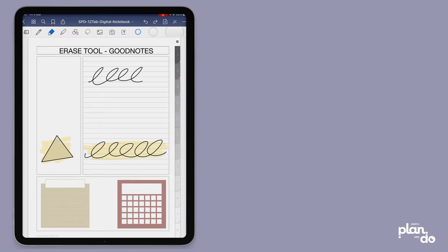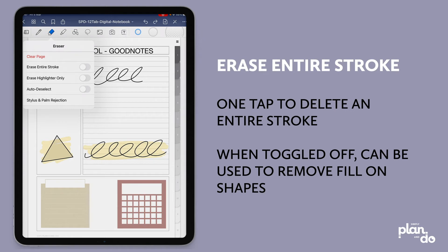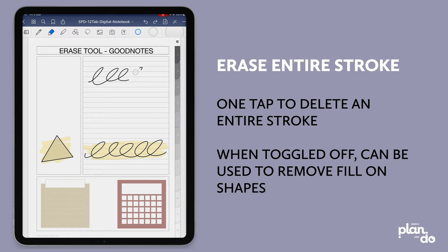If we tap and hold, the next option is erase entire stroke. If I leave that toggled off and come down here to this side, you can see that as I touch it with the eraser, I just remove the bits that I need to remove.